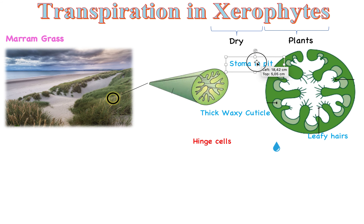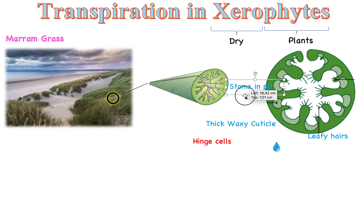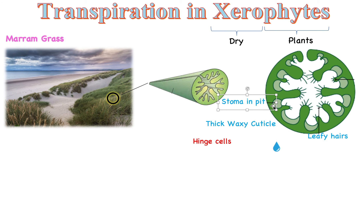Next we have something called stomata in a pit. The stoma is the sweat gland of a plant — it's where the plant sweats from. You can see it's very deep, in like a pit. This makes it very difficult for water leaving the stoma because it has to travel a very long way — all the way from deep in the pit through the gap before it can escape. The stoma being really deep means it takes longer for water to be sweated out.